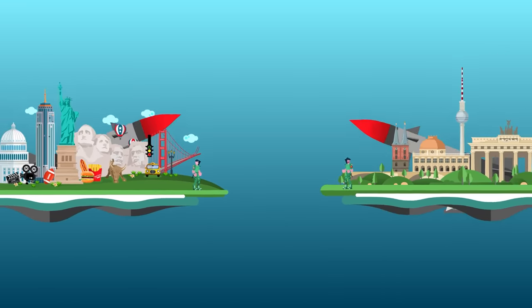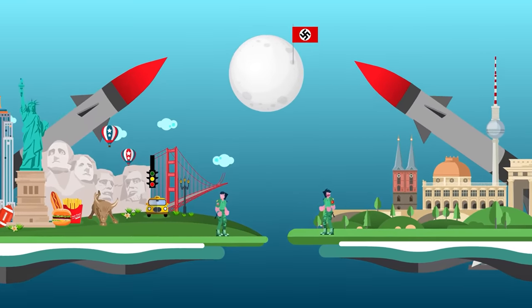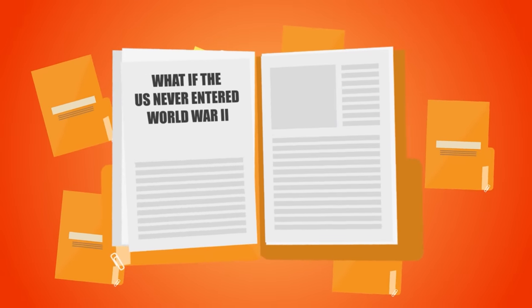A Cold War between the United States and Germany, a Nazi flag on the moon, and an American Pacific Empire? These are some of the weirdest consequences of the United States staying out of World War II.